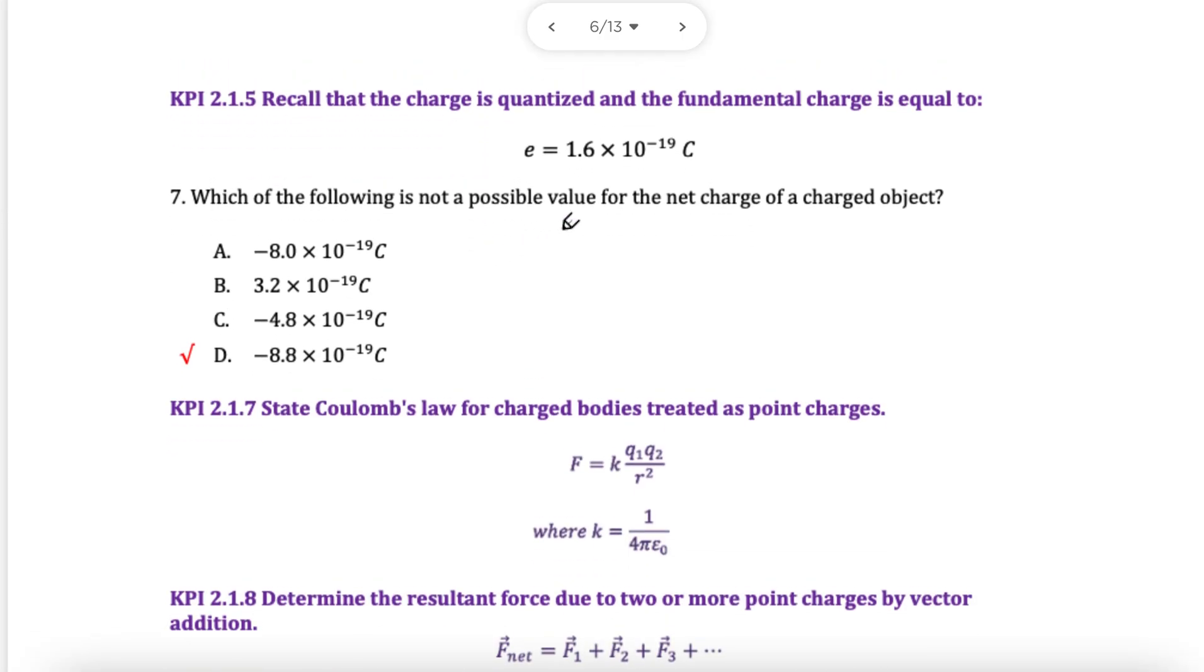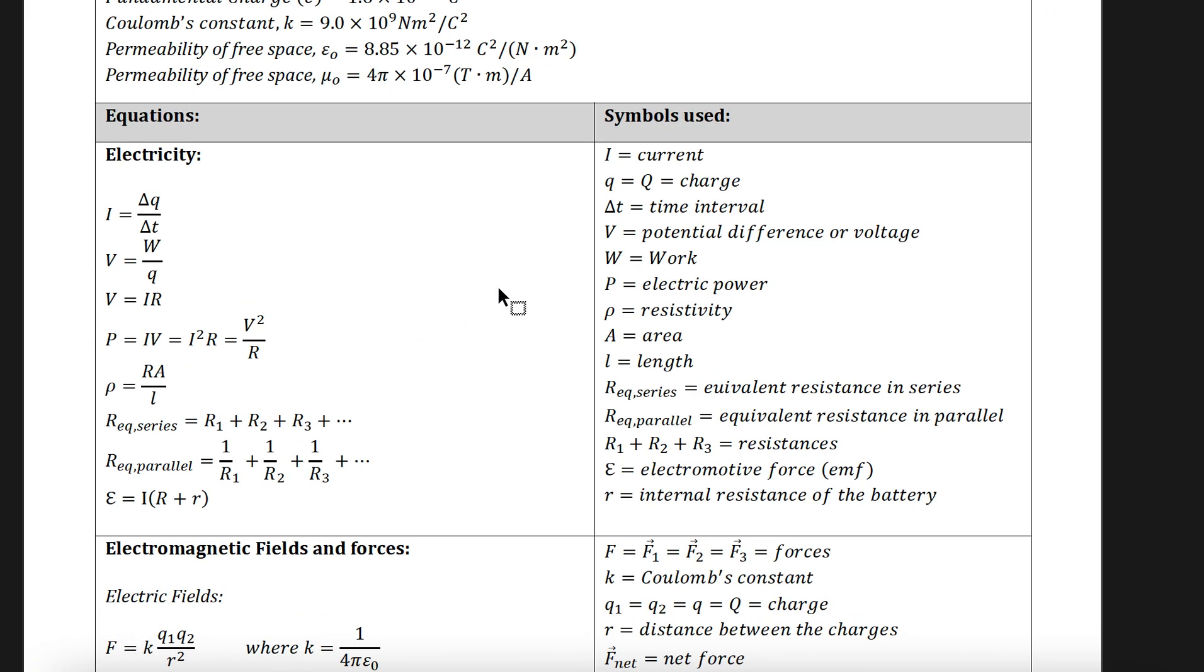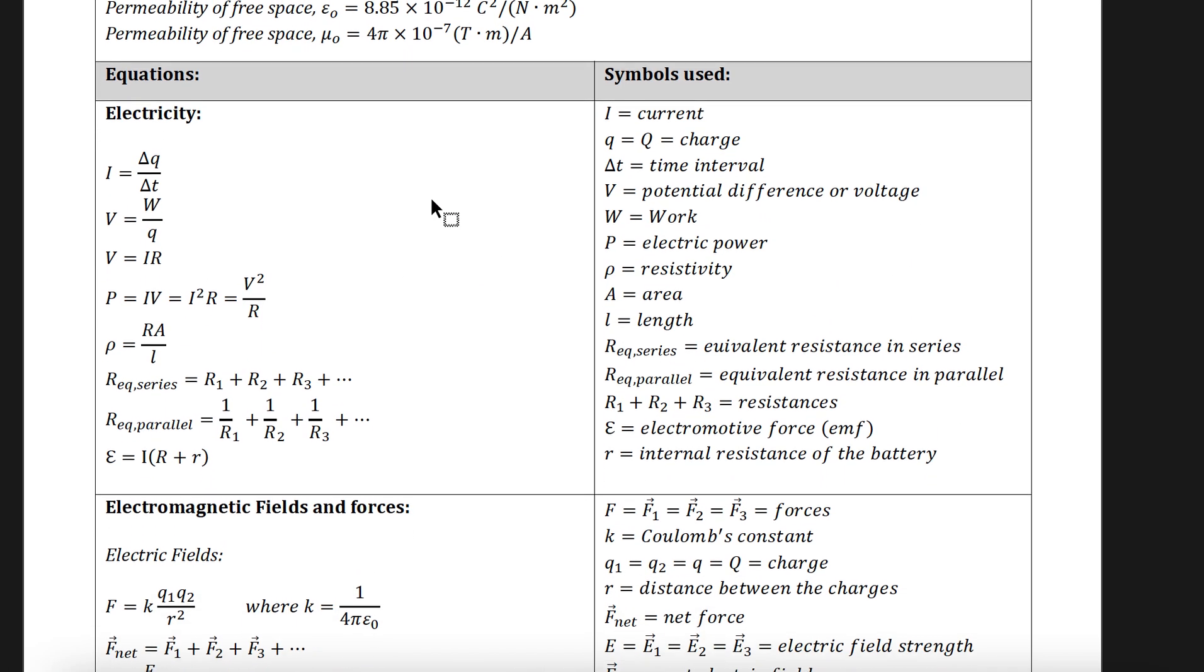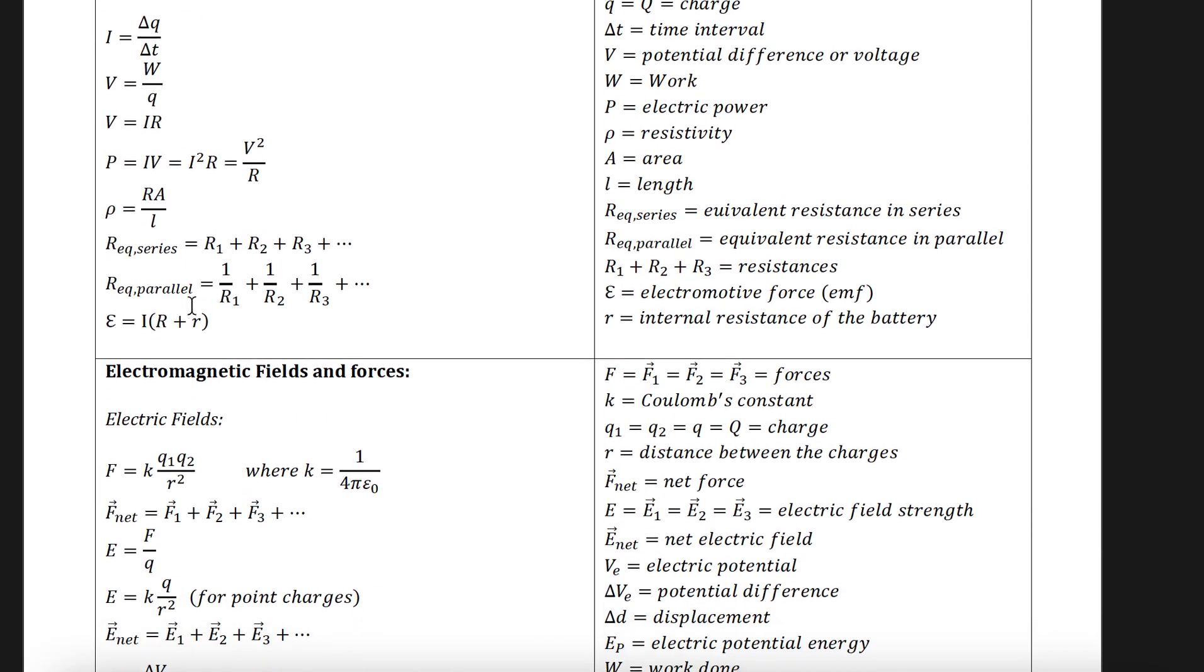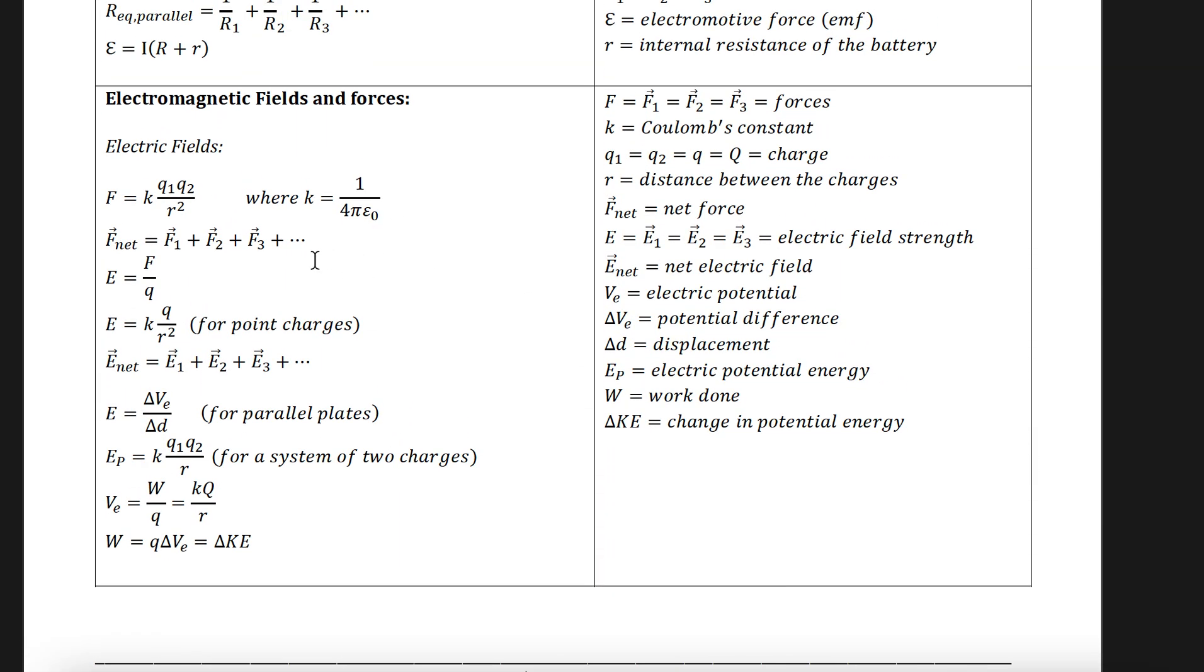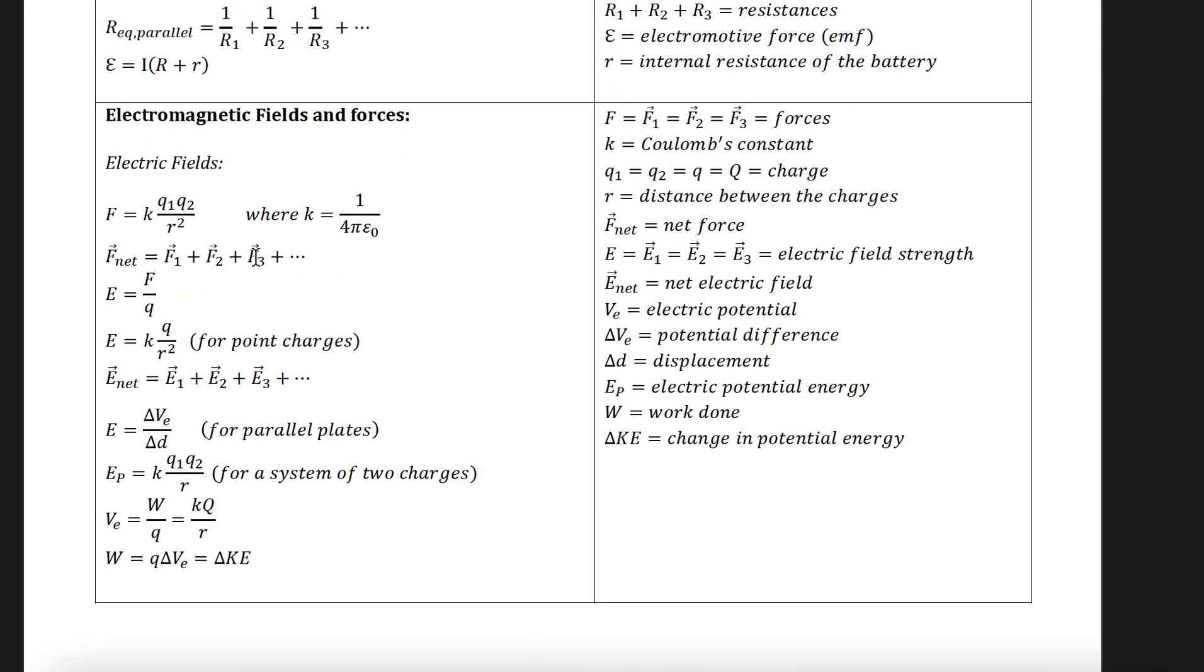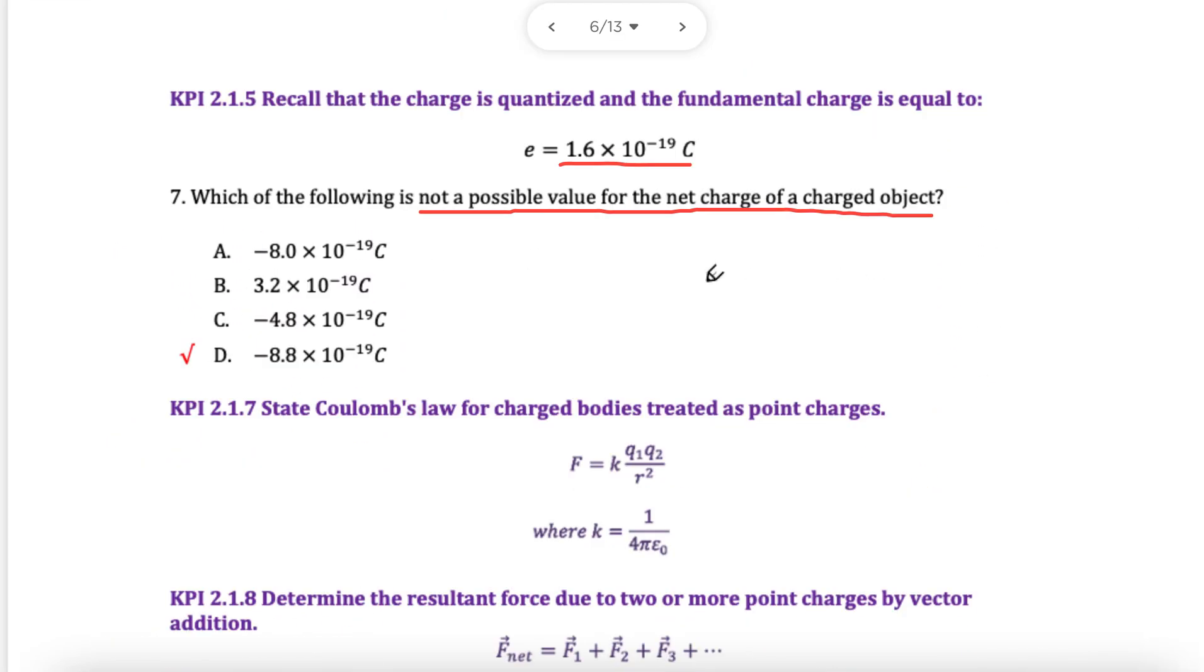Next, we're looking at quantization of charge. Which of these is not a possible value for the net charge of an object? And we have 1.6. This is E. So if you want to figure out the relationship between them, let's have a look at our trusty formula sheet. We're looking for quantization of charge. It doesn't seem to be given to us, q equals nE, which is a bit unfortunate for you. So that means we just need to remember it.